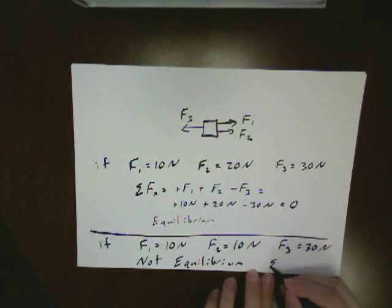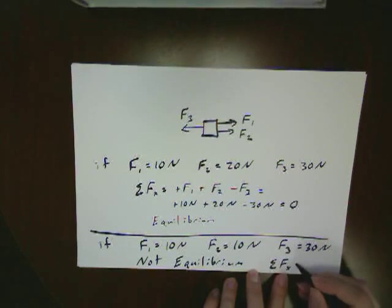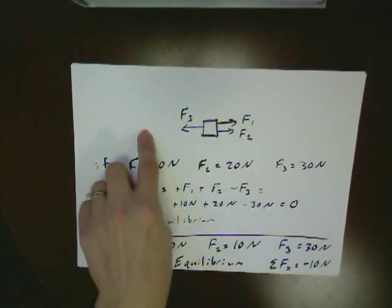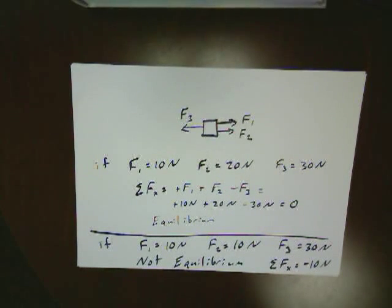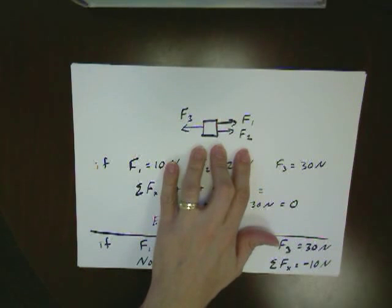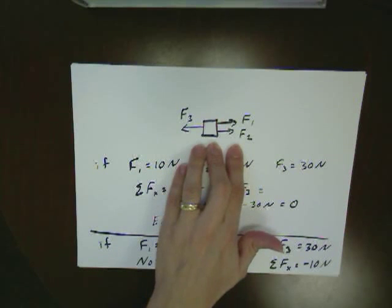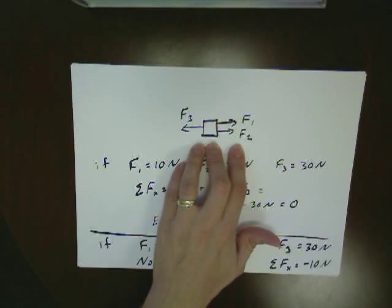And specifically, if I were to work out the full equations, the sum of the forces in the x is going to be minus 10 newtons. 10 newtons towards the left is the extra force that's not balanced out by everything else. So a diagram like this could be in equilibrium, or it might not be in equilibrium. You might have more force to the right, or you might have more force to the left. It just depends on what those numbers are.